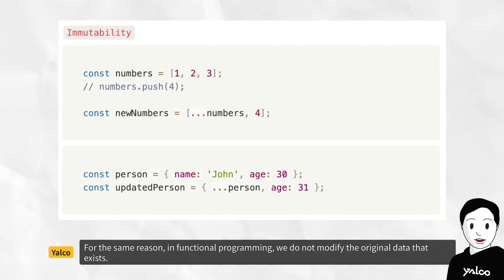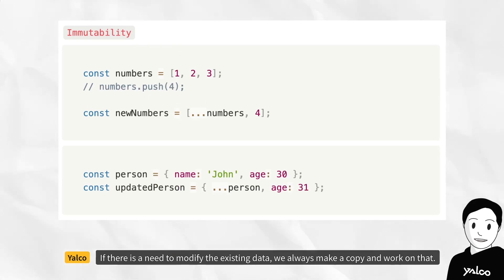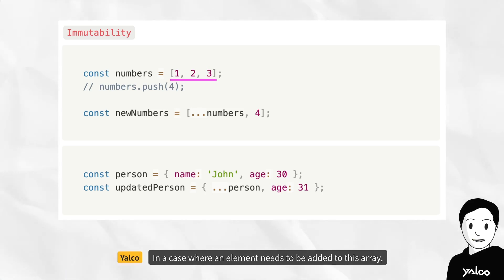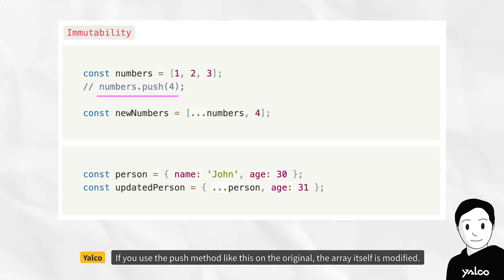For the same reason, in functional programming, we do not modify the original data that exists. If there is a need to modify the existing data, we always make a copy and work on that. In a case where an element needs to be added to this array, if you use the push method like this on the original, the array itself is modified.